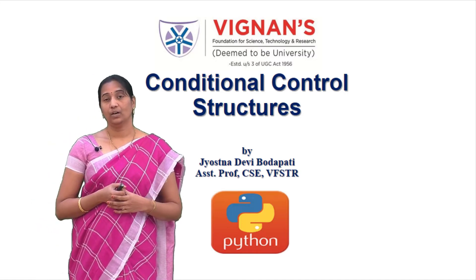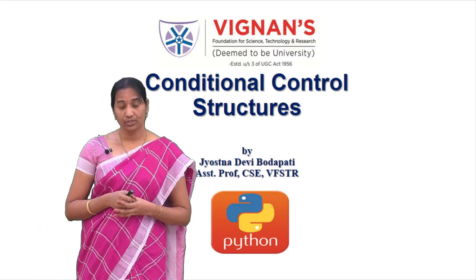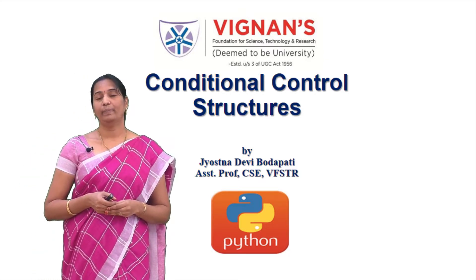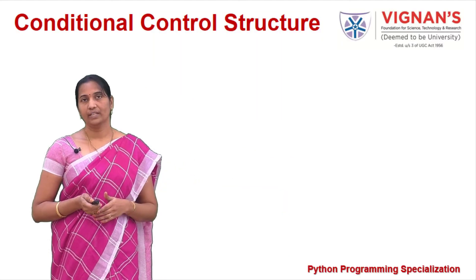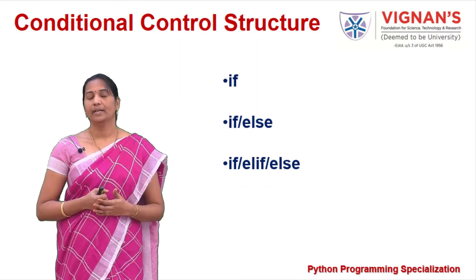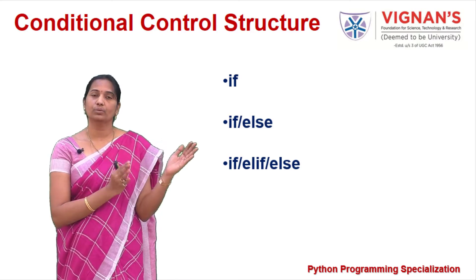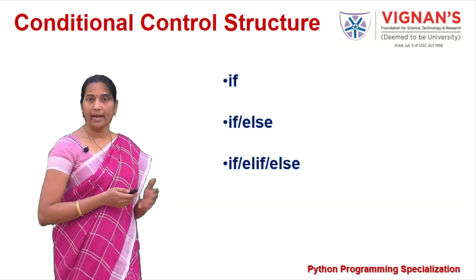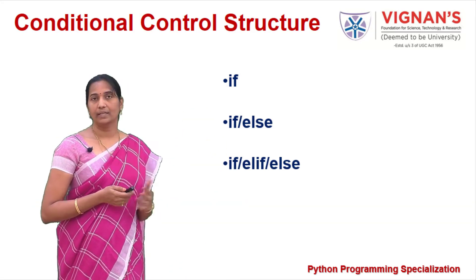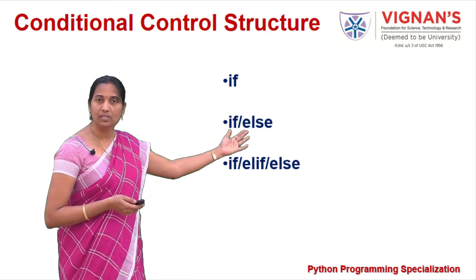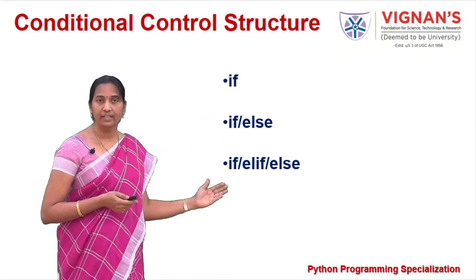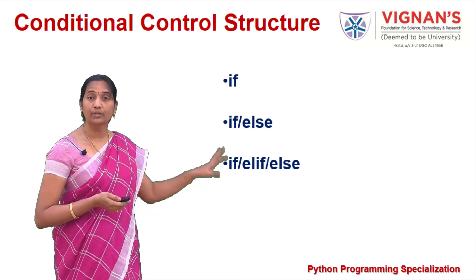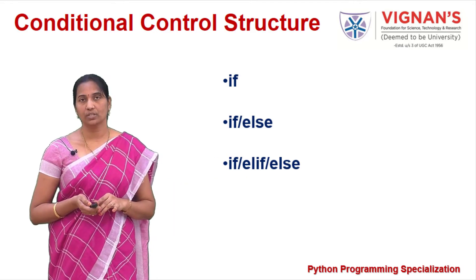In the last video we saw why we need different control structures in a programming language. In this lecture we'll see how Python supports conditional control structures. Depending on the condition, when we need to choose one of multiple paths in the flow of execution, we use conditional control structures. Python supports simple if, if-else, and if-elif-else formats.